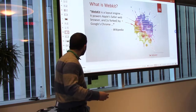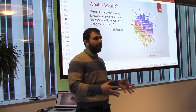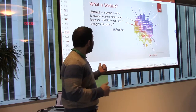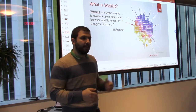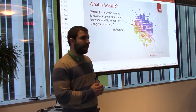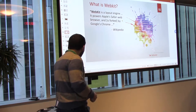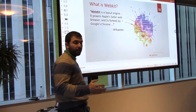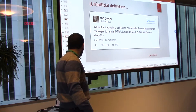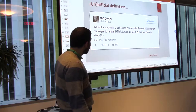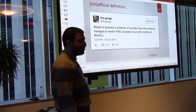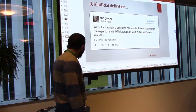WebKit is the layout engine being used today. Most people attribute WebKit to Safari, Apple's browser. But really it was actually a fork from KDE — KDE initially started the WebKit initiative. Then people like Apple and Google started picking up the project and injecting a lot of innovation and power into it. Today most browsers have taken the fork of WebKit and done their own thing — Chrome is a big fork of WebKit. And the unofficial definition: WebKit is basically a collection of views-after-free that somehow managed to render HTML, probably via a buffer overflow in WebGL. Yes, it is very vulnerable.